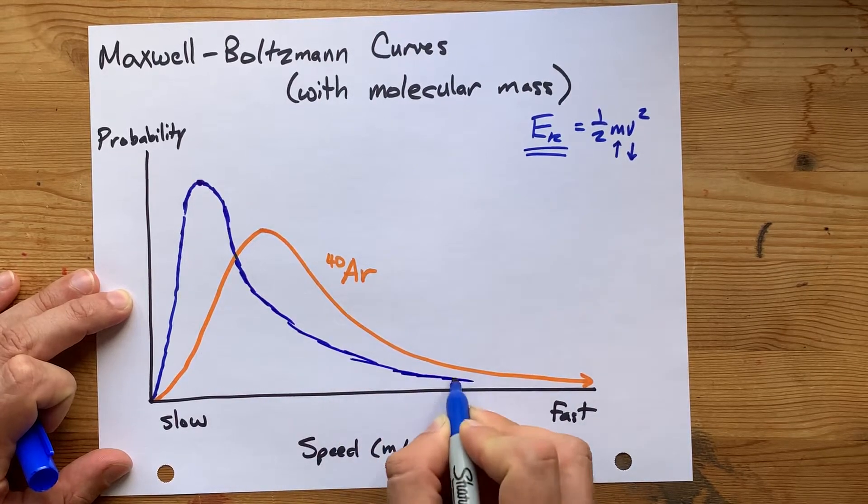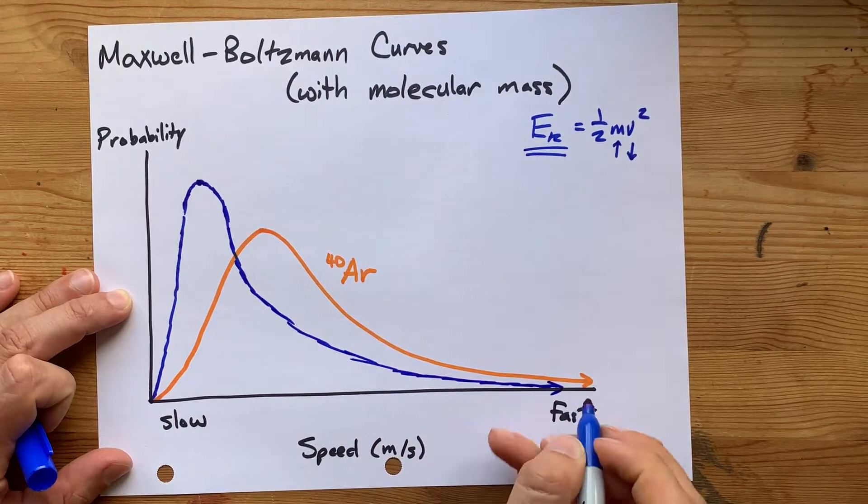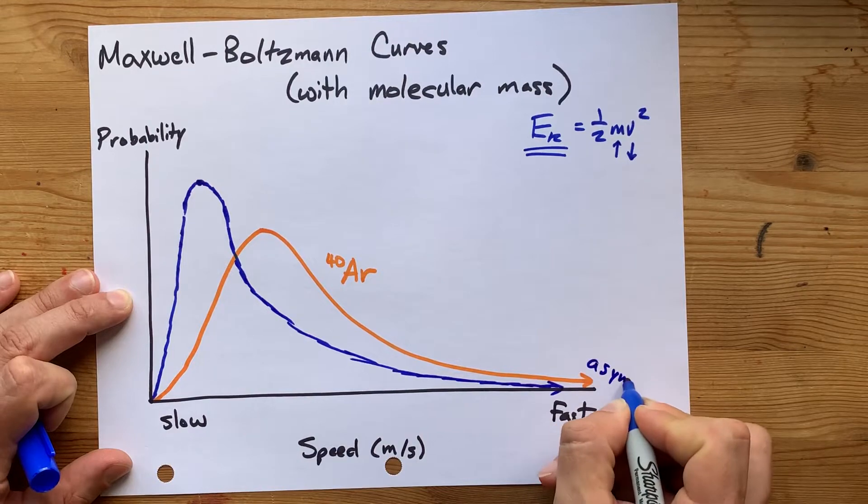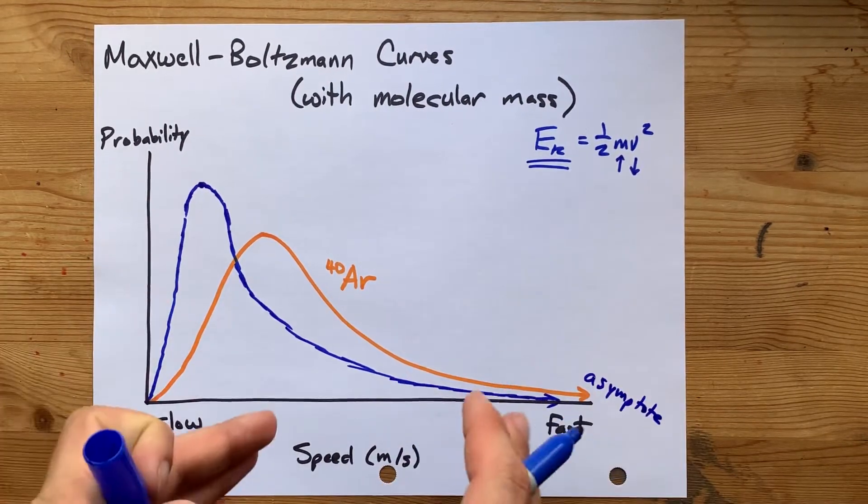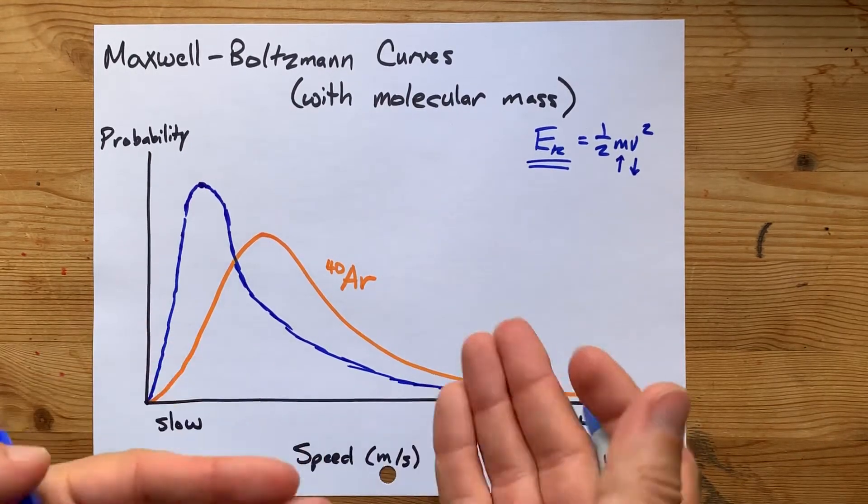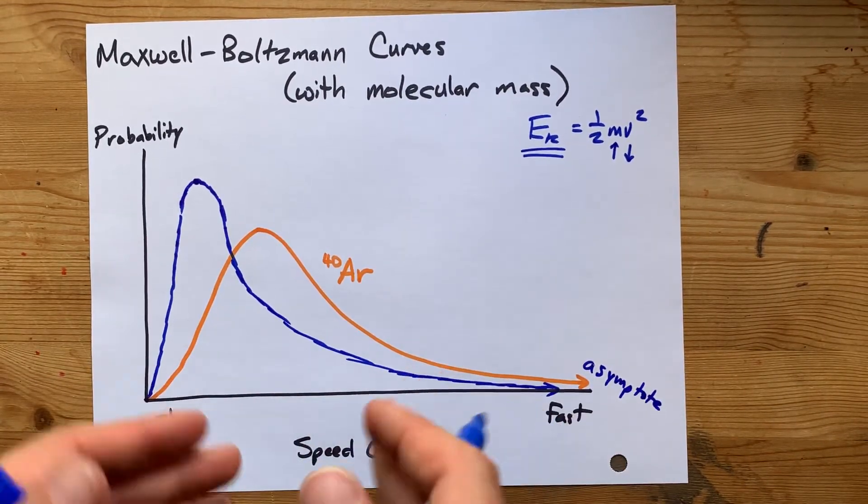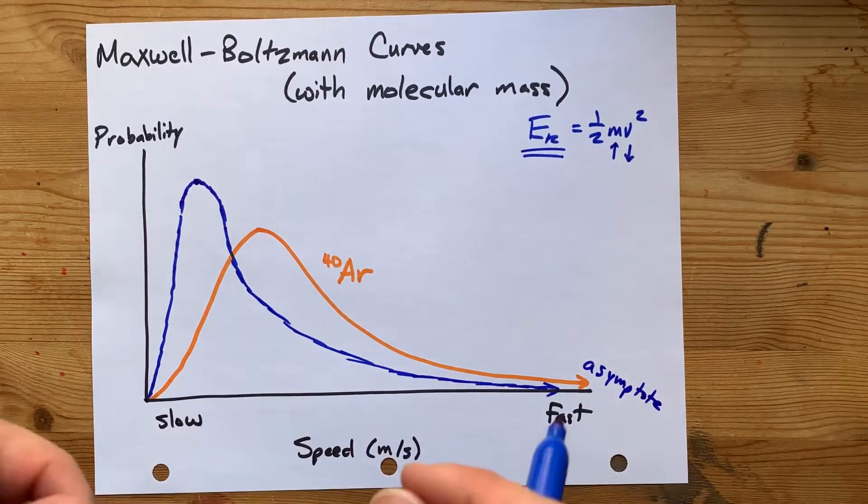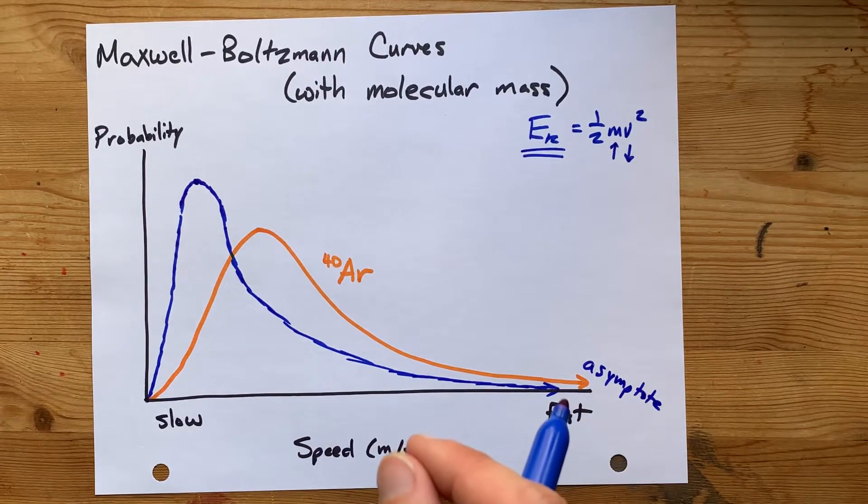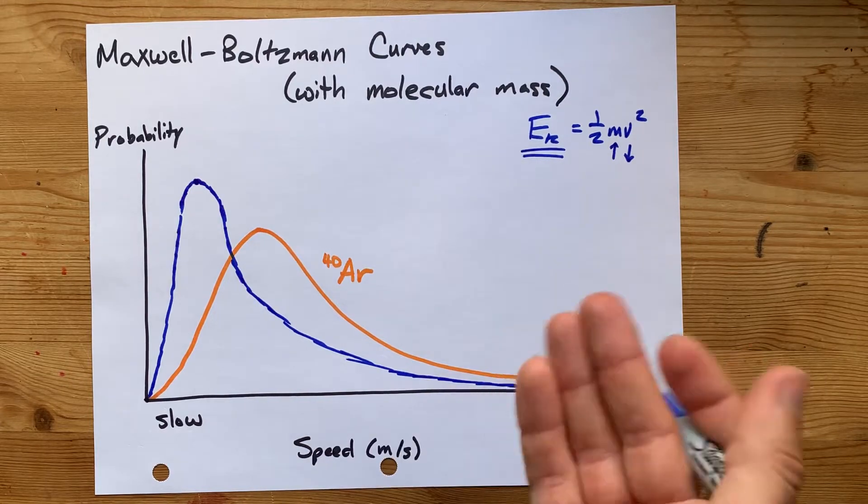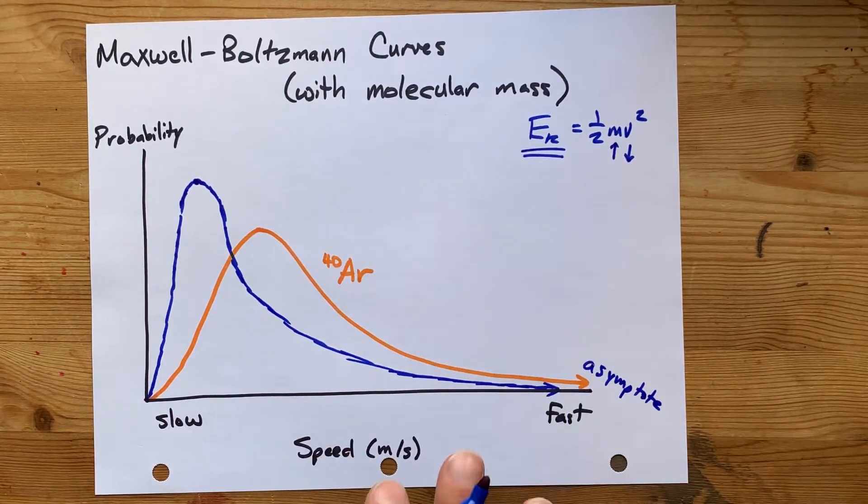Now, I don't want you to hit the x-axis. This is what mathematicians call an asymptote. You get closer and closer and closer to it, but it never hits zero. And I know it's impossible for particles to have a speed of, like, the speed of light, but probability-wise, it's very, very low, but technically not zero.